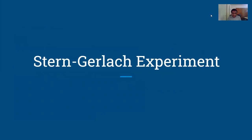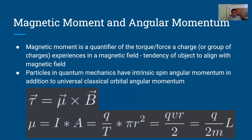Next we'll discuss the Stern-Gerlach experiment. Before we get there, we need the key ideas of magnetic moment and angular momentum. Magnetic moment in electromagnetism is a quantifier of the torque that a charge experiences in a magnetic field, or the tendency of objects to align with a magnetic field. The torque is equal to the magnetic moment cross the magnetic field — this definition helps us understand the Stern-Gerlach experiment.